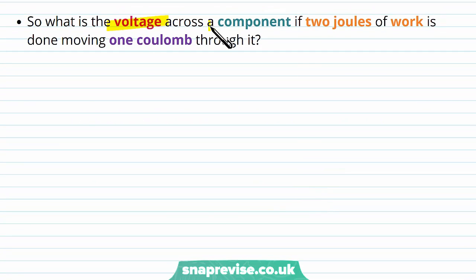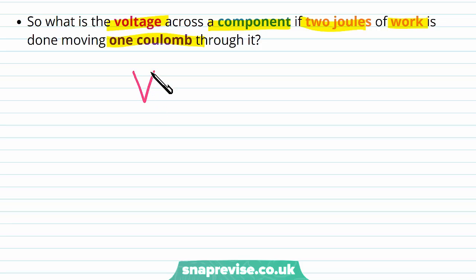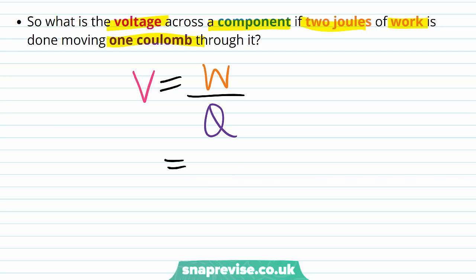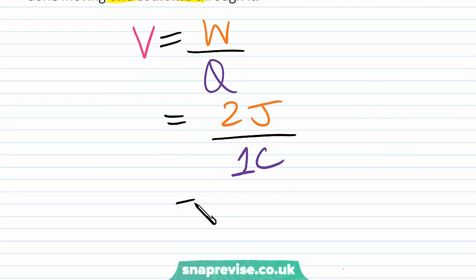What is the voltage across a component if 2 joules of work is done moving 1 coulomb through it? We write down our equation and substitute in our numbers: 2 joules of work done divided by 1 coulomb of charge moved gives a voltage equal to 2 volts.